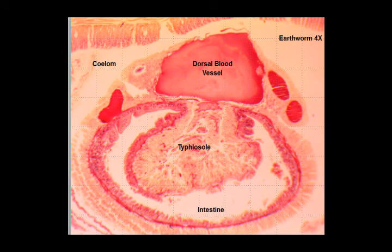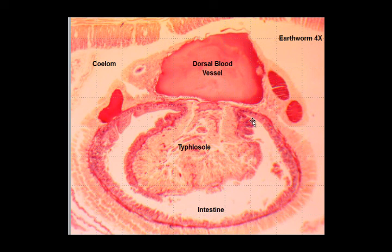Here's a slide cross-section of an earthworm. Looking at the outer part, the cavity around the intestine is called the coelom. There's the dorsal blood vessel. The typhlosole fold inside the intestine allows it to absorb more nutrients through diffusion.